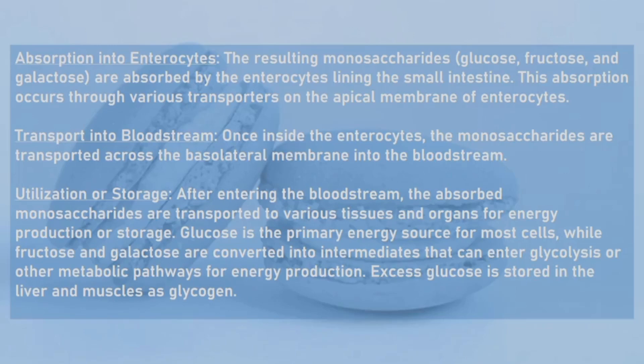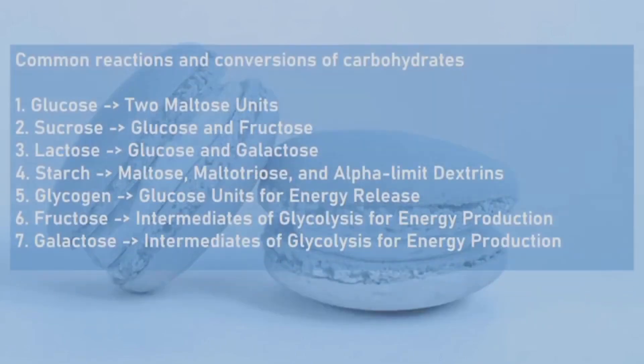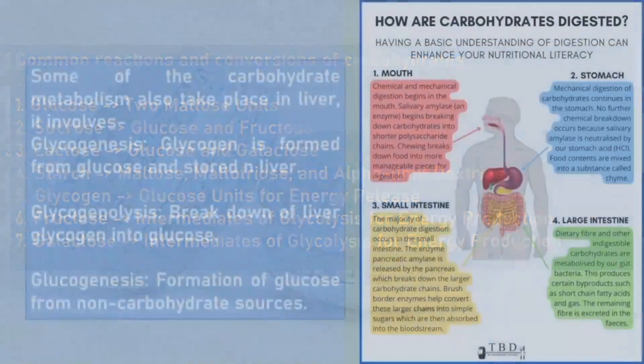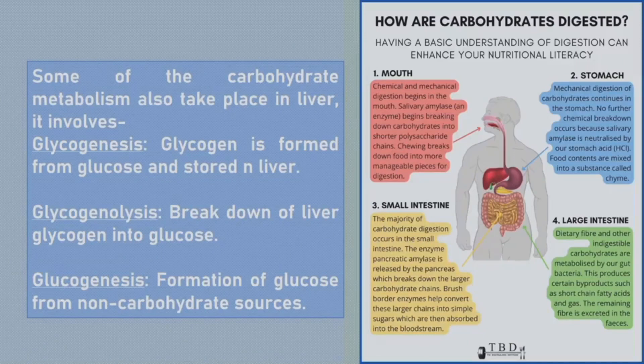12. Excess glucose is stored in the liver and muscle as glycogen. 13. Common reactions and conversions of carbohydrates: Some carbohydrate metabolism also takes place in the liver. 14. It involves glycogenesis — glycogen is formed from glucose and stored in the liver. 15. Glycogenolysis — breakdown of liver glycogen into glucose.